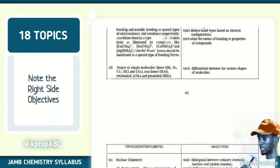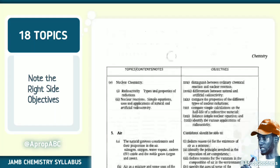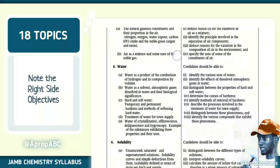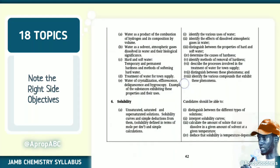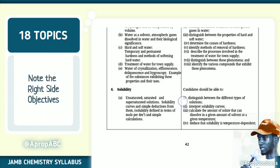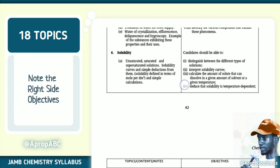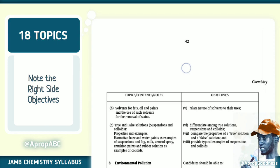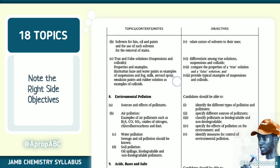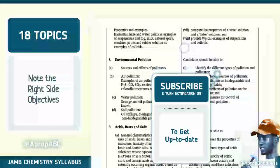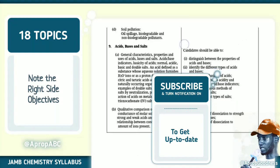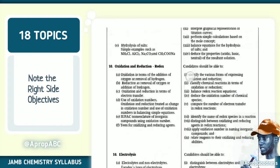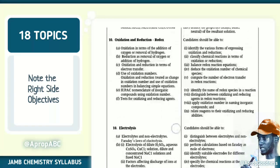Topic five is air. Topic six is water. Check the right-hand side for the objectives you need to know for those particular parts. Topic seven is solubility. Topic eight is environmental pollution. Topic nine is acid, base and salt. Topic ten is oxidation and reduction — that's redox reactions.